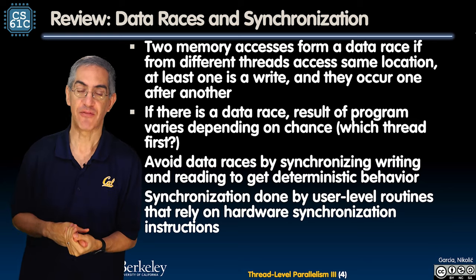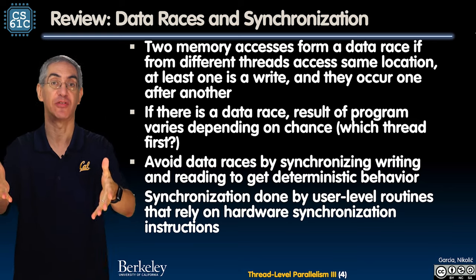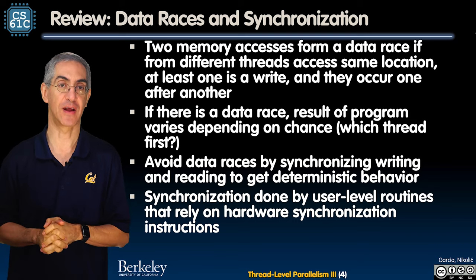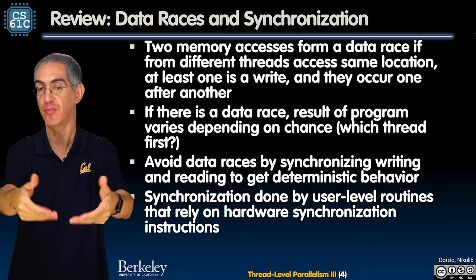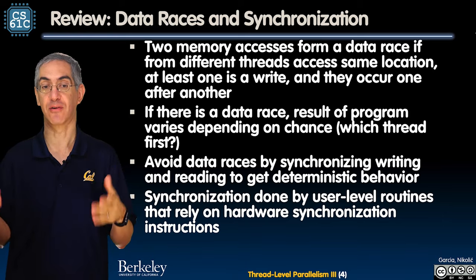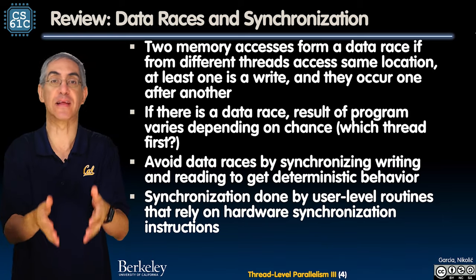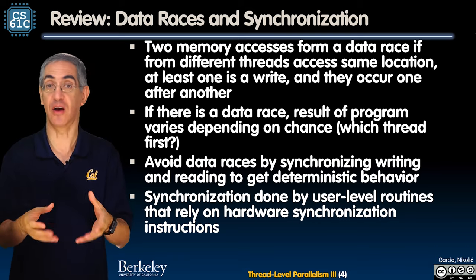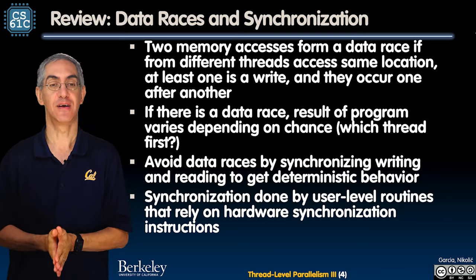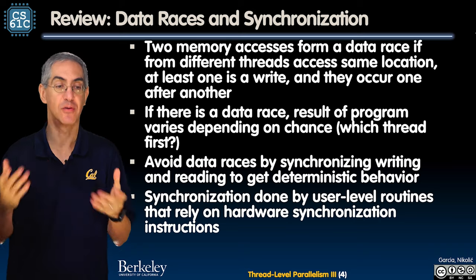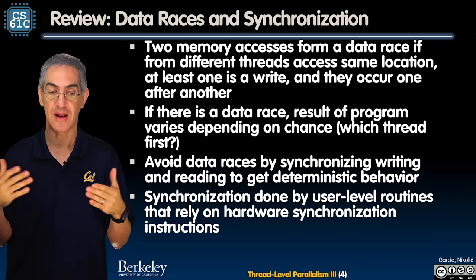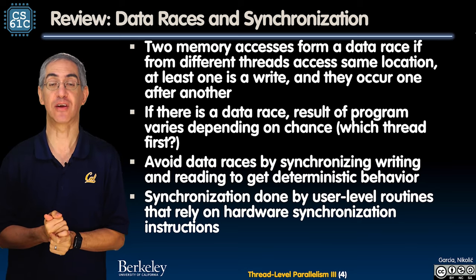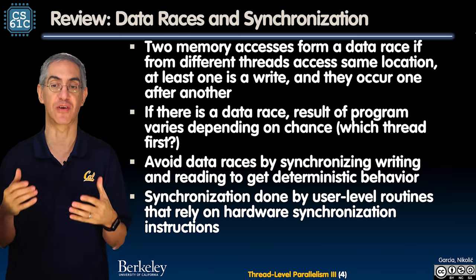In a shared memory system, two memory accesses can form a data race. You can have two memory accesses both trying to read and update a particular variable. Even in C code, that variable — say a sum, like when we tried to sum up pi — depending on how you write your code, you cannot have multiple threads affecting a shared variable. That's going to be trouble. That's a data race, and we want to prevent that with some kind of synchronization.